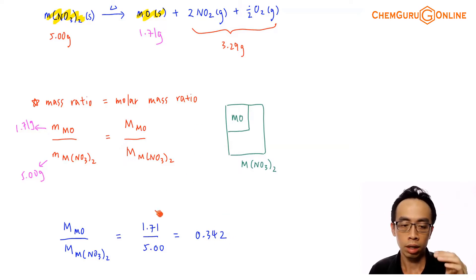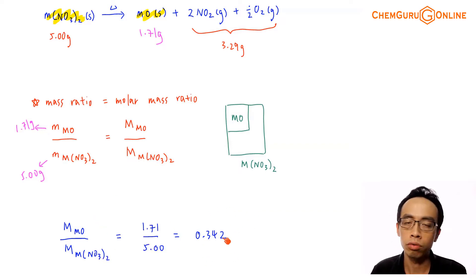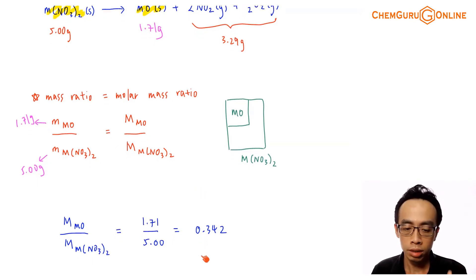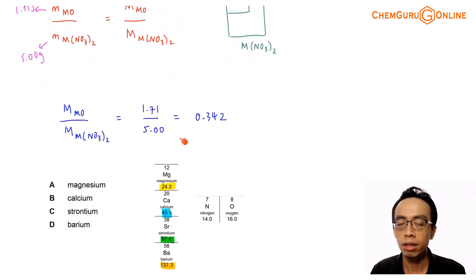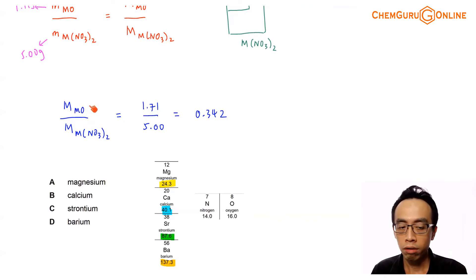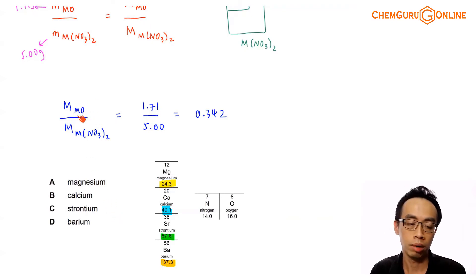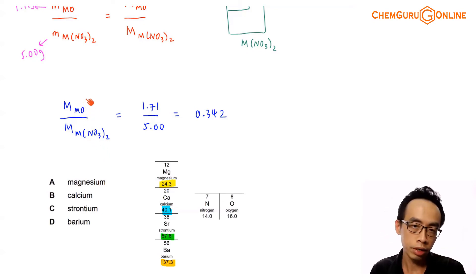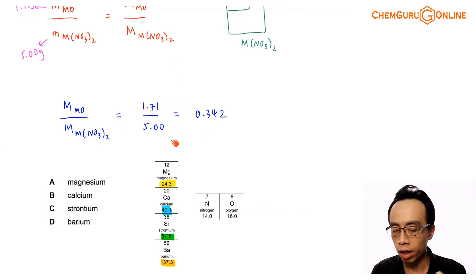Since the question gives four possible identities for the group 2 metal — magnesium, calcium, strontium, and barium — we can calculate the molar mass ratio of each metal oxide to its corresponding nitrate. We work out the ratio for magnesium oxide to magnesium nitrate, calcium oxide to calcium nitrate, strontium oxide to strontium nitrate, and barium oxide to barium nitrate, and see which one corresponds to 0.342 to identify the unknown group 2 metal.